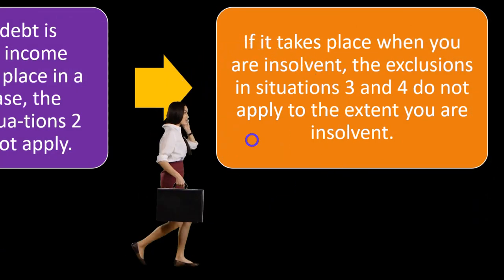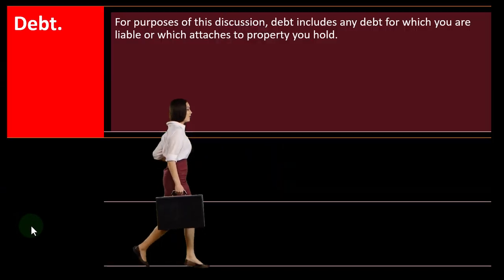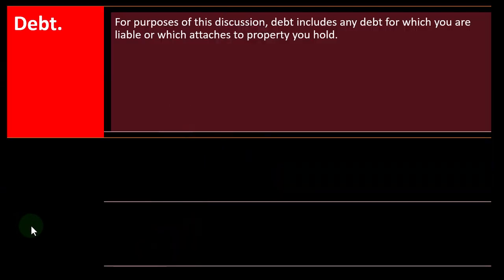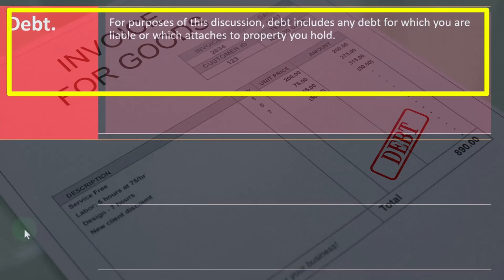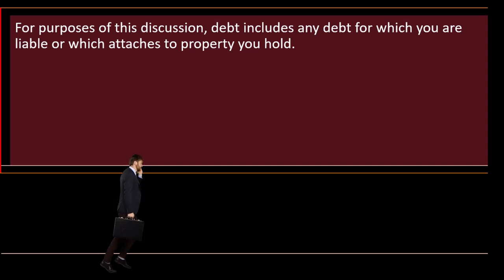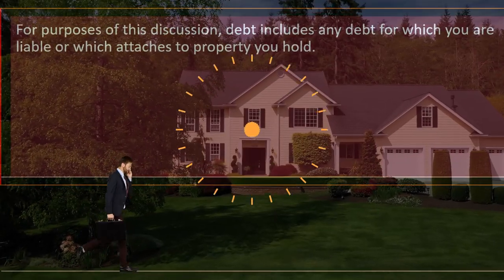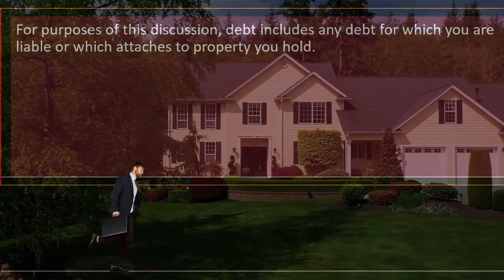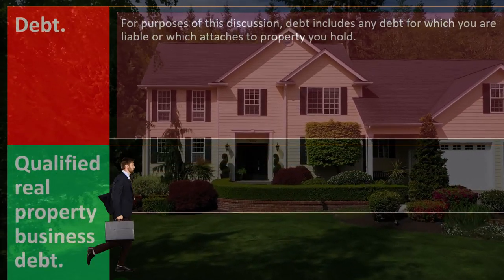Debt, for purposes of this discussion, includes any debt for which you are liable or which attaches to property you hold. If debt attaches to property, that typically means the property serves as collateral — meaning if you default, the creditor may be able to repossess it, such as repossessing a car.